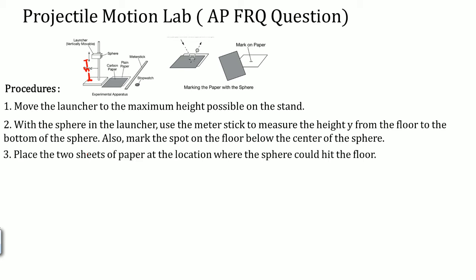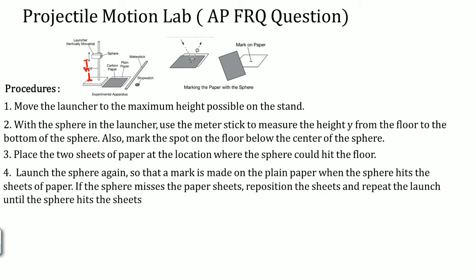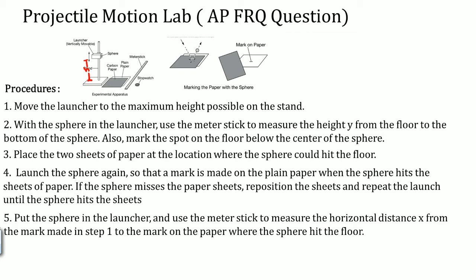Three, place the sheets of paper at a location where the sphere could hit. Then launch the sphere so that the mark is made on the paper when the sphere hits the sheet of paper. If the sphere misses that sheet of paper because you put in the wrong location, repeat the experiment. Just move the sheet around. Then mark the location where the sphere travels and hits the mark on the paper. That is your Δx, your distance.